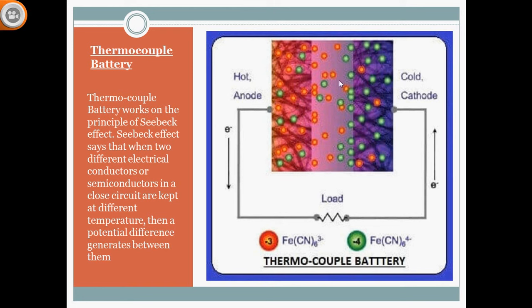We connect wires at both ends, and due to this the electrons start moving from the hot side through the load. Current starts flowing inside the load, which may be a light or a small motor. The light will glow or the motor will run as a result.